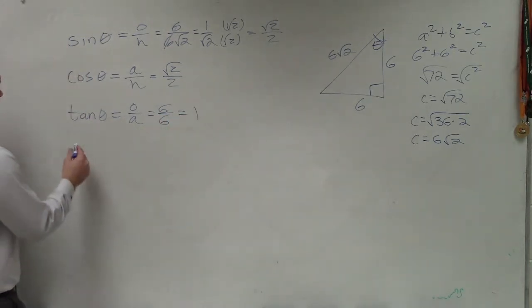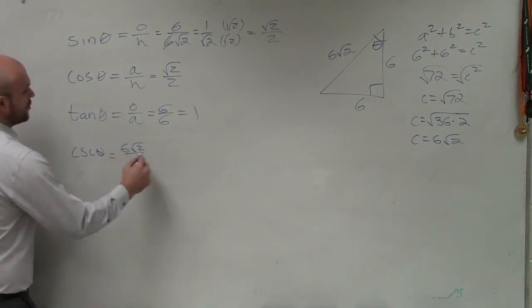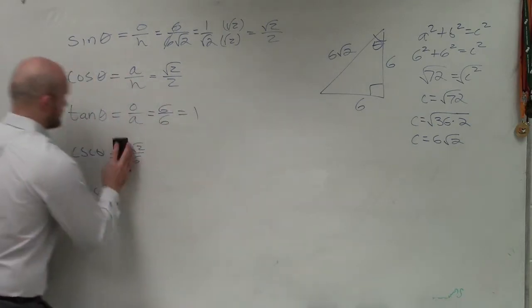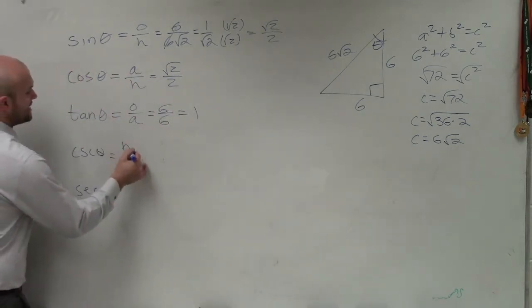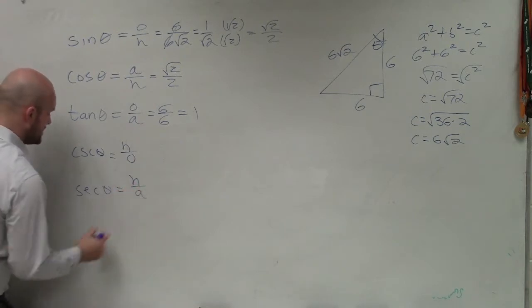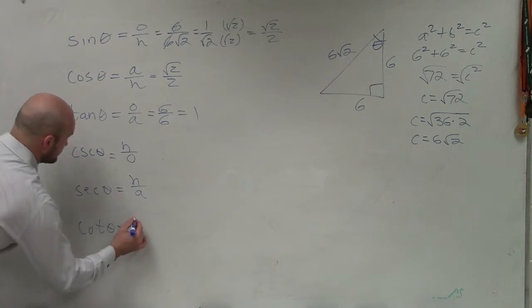Now we're going to do the reciprocal properties. So we have cosecant of theta, which is now going to be 6 square root of 2 over 6. The secant, which is a reciprocal... Cosecant, which is now going to be hypotenuse over opposite. Secant, which is now going to be hypotenuse over adjacent. And the cotangent of theta, which is now adjacent over opposite.